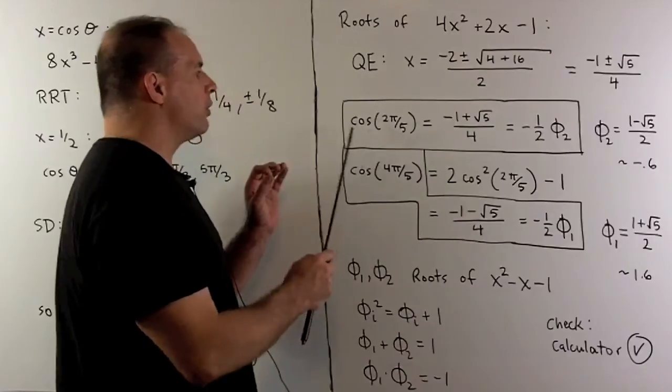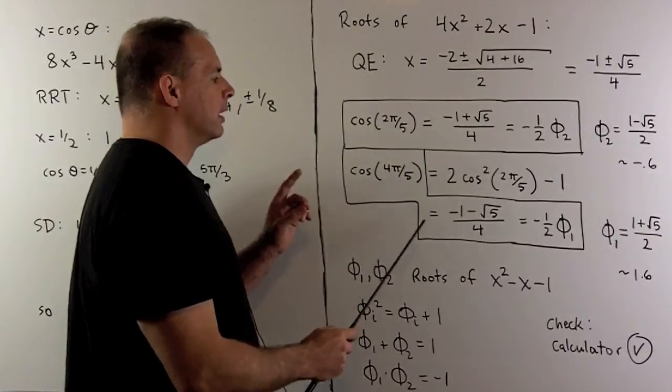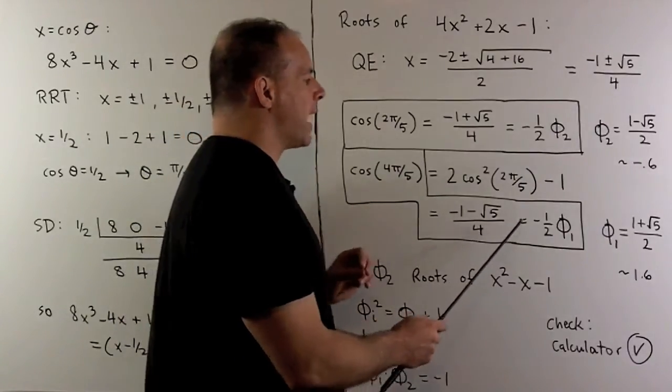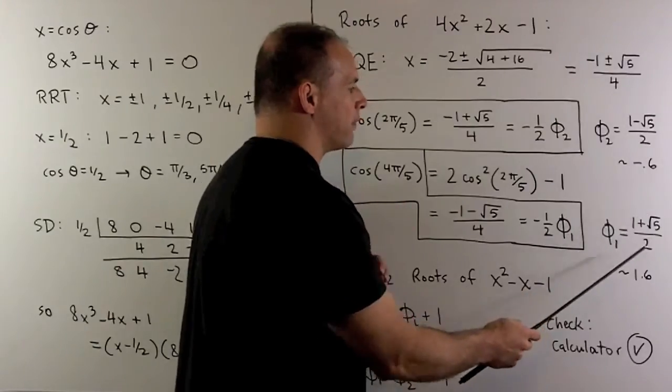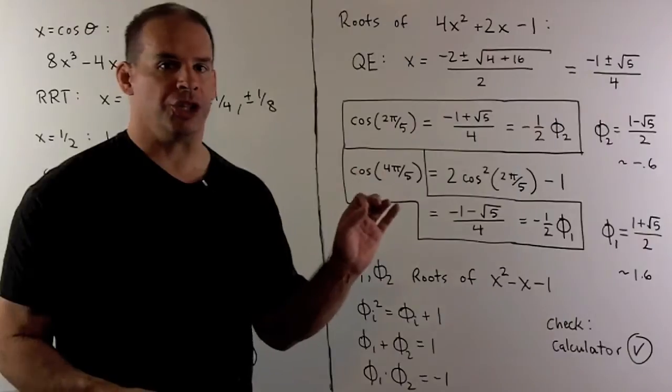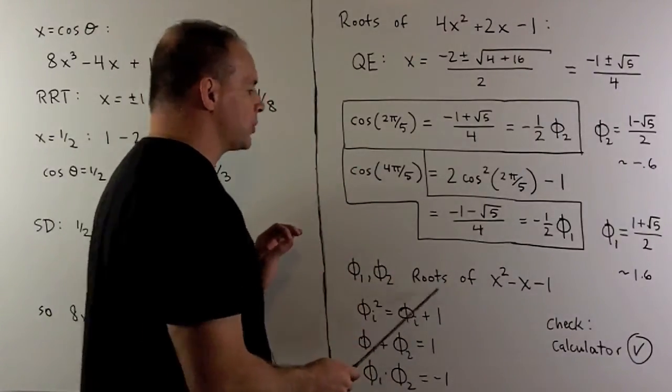If we apply the double angle formula, we can get the cosine of 4π/5. That'll be equal to (-1 - √5)/4, which equals -1/2 φ₁. φ₁ equals (1 + √5)/2. And that's better known as golden mean or the golden ratio. Again, that's going to be a root of this polynomial.